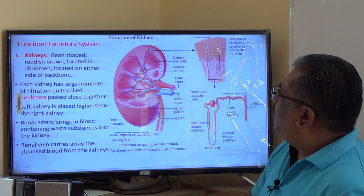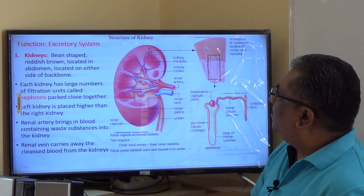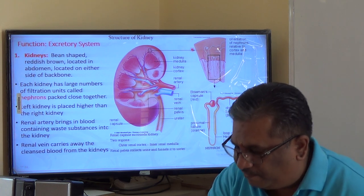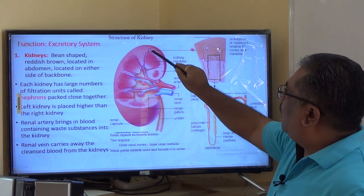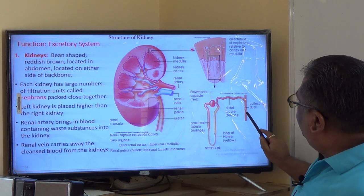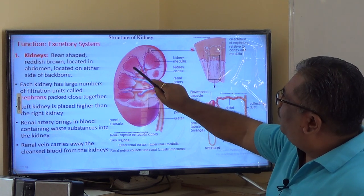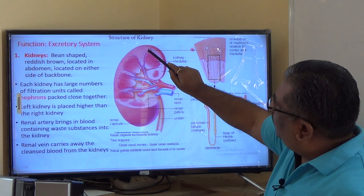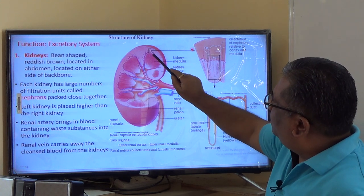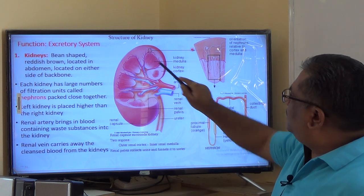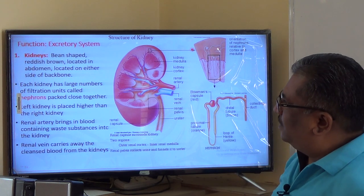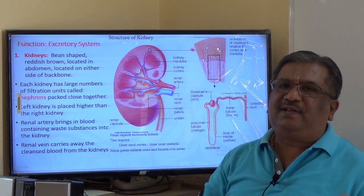Millions of nephrons are present in the kidney. The nephrons are located in the cortex, the outer portion of the kidney. The collecting ducts are located in the medulla, which is a soft pyramid-like structure. So nephrons are in the cortex and the urine-collecting ducts are in the medulla.